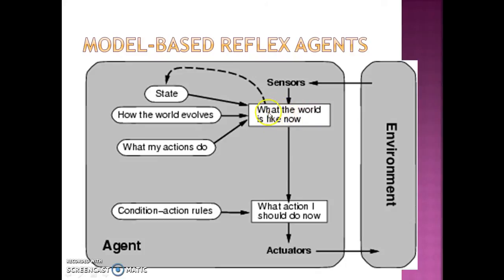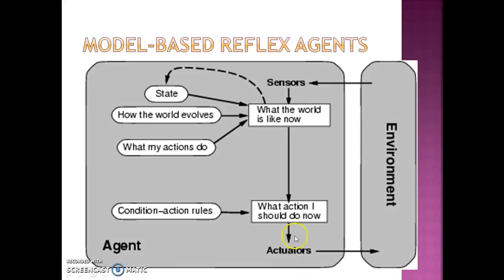Once we decide on the world state, it is matched against the condition-action rules and we get the first action that matches the given state. If there are multiple actions for the same condition, the agent will always choose the first action that matches the condition-action rule. That selected action is passed to the 'what action should I do now' component and then through to the actuators, which is how the agent performs an action on the environment.